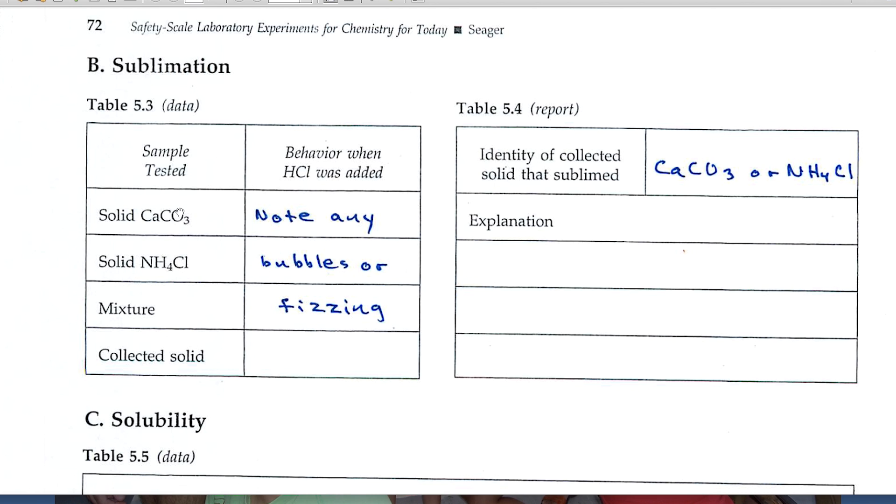That is, when we heat the sample, it'll go into the vapor, the solid will go into the vapor state. Then positioned above the sample is a cool watch glass, and the vapor will deposit as crystals on the bottom of that watch glass. We can collect the solid. Here's a blank for the collected solid.